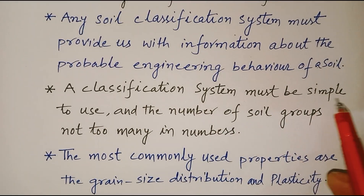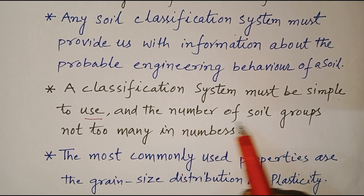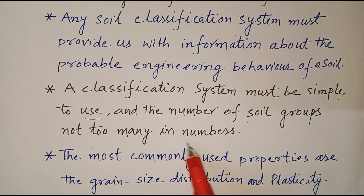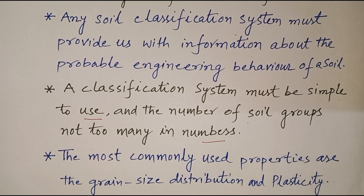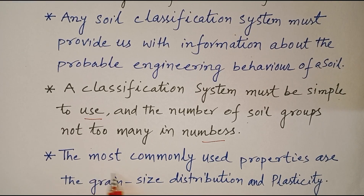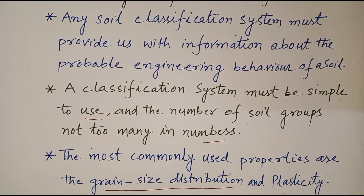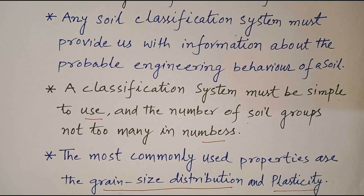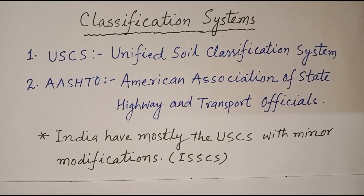A classification system must be simple to use and the number of soil groups not too many in numbers. In case of soil classification, the most commonly used properties are grain size distribution and plasticity. We have already learned grain size distribution and plasticity in our previous classes.